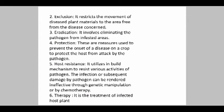Secondly, exclusion — it restricts the movement of diseased plant material to areas free from the disease concern. Next is eradication — it allows the elimination of the pathogen from the infested or infected area. Fourthly, protection — these measures are used to prevent onset of diseases on the crop and protect the host from attack by the pathogen. Lastly, host resistance — the utilization of mechanisms to resist various activities of a pathogen, and damage from infection can be rendered ineffective through genetic manipulation or chemotherapy. Also, therapy — various treatments are applied to the infected host plant.